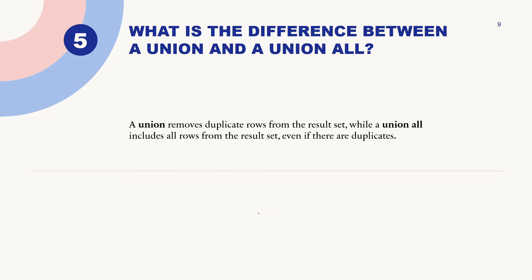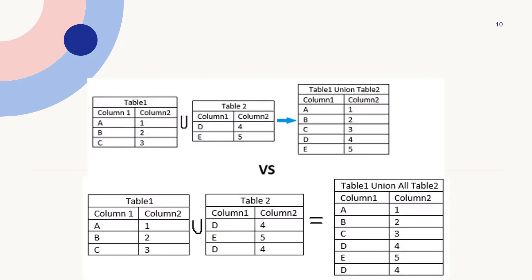What is the difference between UNION and UNION ALL? UNION removes duplicate rows from the result set, whereas UNION ALL includes all rows from the result set even if they're duplicates. If you want to include duplicates, use UNION ALL. If you don't want duplicates, use UNION. For example, if we have table 1 with ABC and table 2 with DE, UNION will give ABCDE. But if both tables have D as a duplicate, UNION will remove the duplicate while UNION ALL will keep both D values.